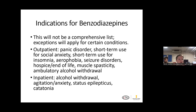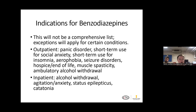What are the actual indications for benzodiazepine medications? This is not a fully comprehensive list, and for certain conditions there will be exceptions. But in general, in the outpatient setting, benzodiazepines have indications for panic disorder, short-term use for social anxiety, short-term use for insomnia, aerophobia or fear of flying, seizure disorders, hospice or palliative care settings, muscle spasticity, and ambulatory alcohol withdrawal. In the inpatient or hospital setting: alcohol withdrawal, agitation or anxiety, status epilepticus, and catatonia.